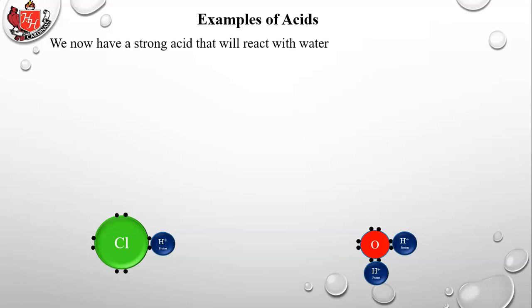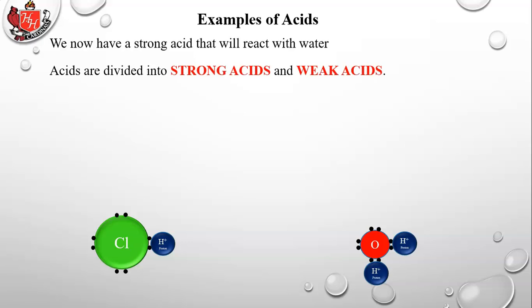This forms hydrochloric acid — a strong acid that will react with water. The H pluses represent protons, which are actually intact hydrogen atoms covalently bonded: a proton and one of the electrons it's sharing with the oxygen. Acids are divided into strong acids and weak acids.